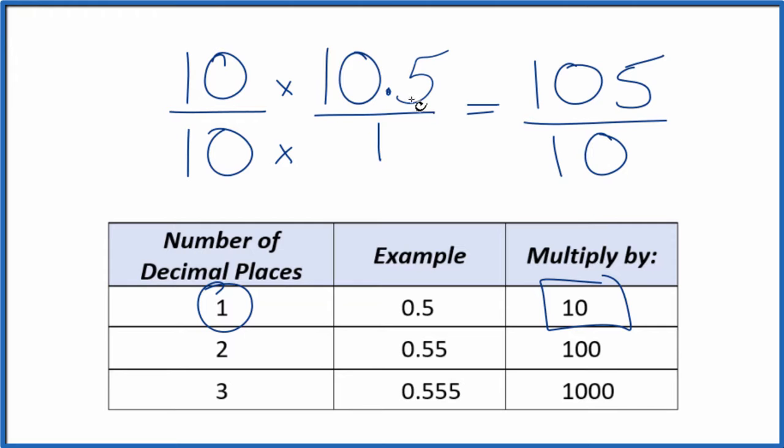And now we have our fraction. The decimal 10.5 equals the fraction 105 over 10. We could simplify this though. This isn't in lowest terms. So let's do that.